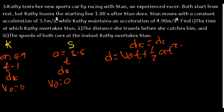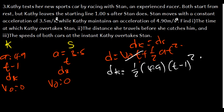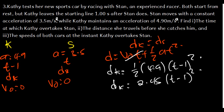For Kathy: D_K = ½ × 4.9 × (T − 1)². Calculating ½ × 4.9 = 2.45. So D_K = 2.45(T − 1)².